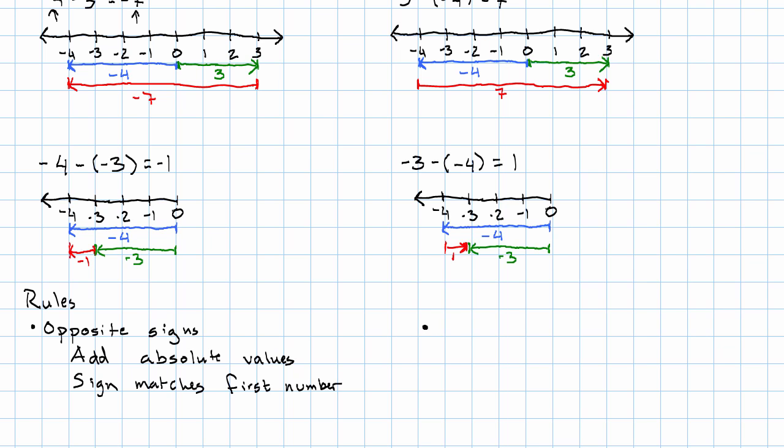What if they have the same sign? Well, we definitely want to subtract the absolute values. And we want to do it in the order that works, bigger minus smaller. How are we going to decide the sign of the answer?